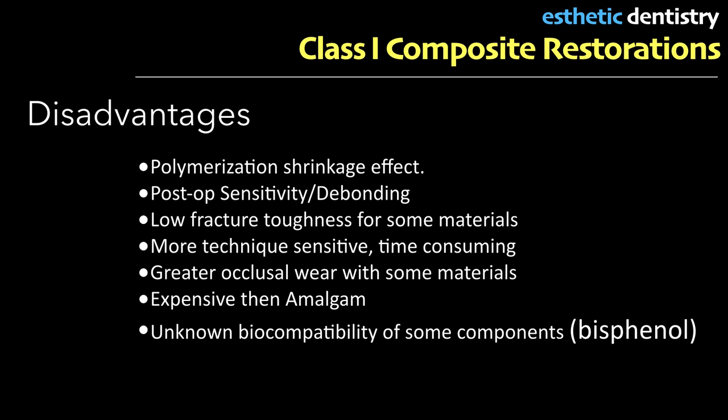Disadvantages are mostly material-related or arise when the material is not used as recommended. There is greater localized wear, potential polymerization shrinkage effects, linear coefficient of thermal expansion concerns, and biocompatibility of some components such as bis-GMA is unknown. It requires more time to place compared to amalgam. It is more technique sensitive — requiring etching, priming, adhesive placement, composite insertion, developing proximal contacts, finishing and polishing — and it is more expensive than amalgam.